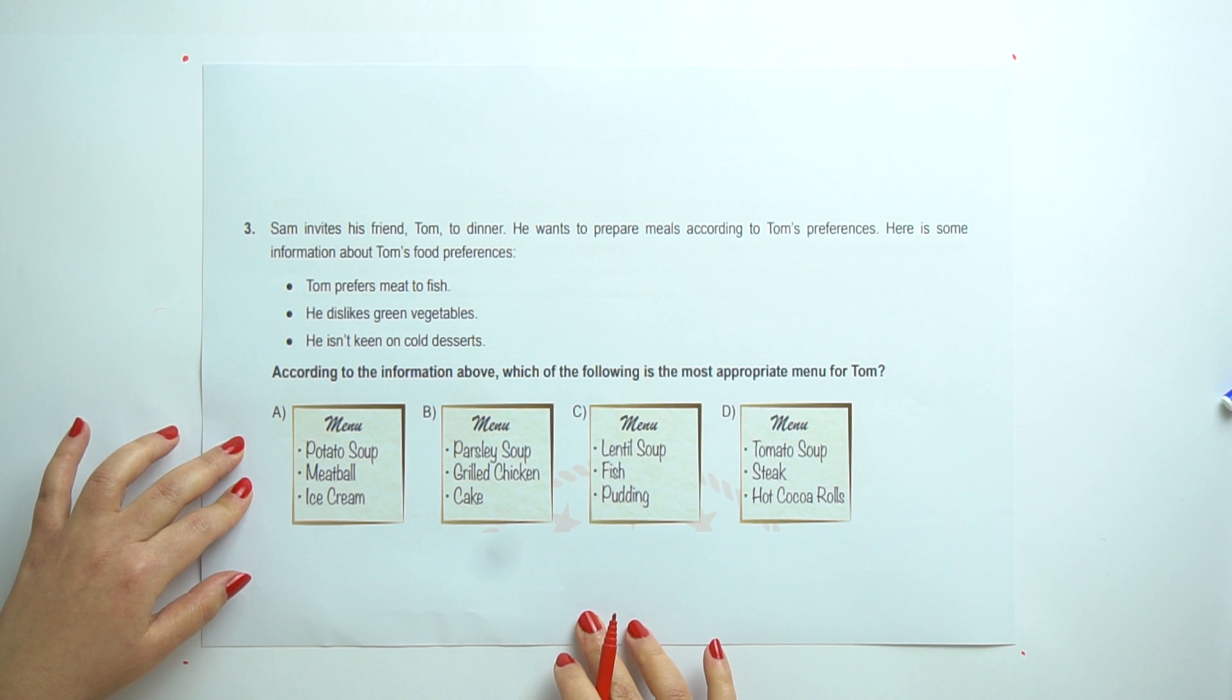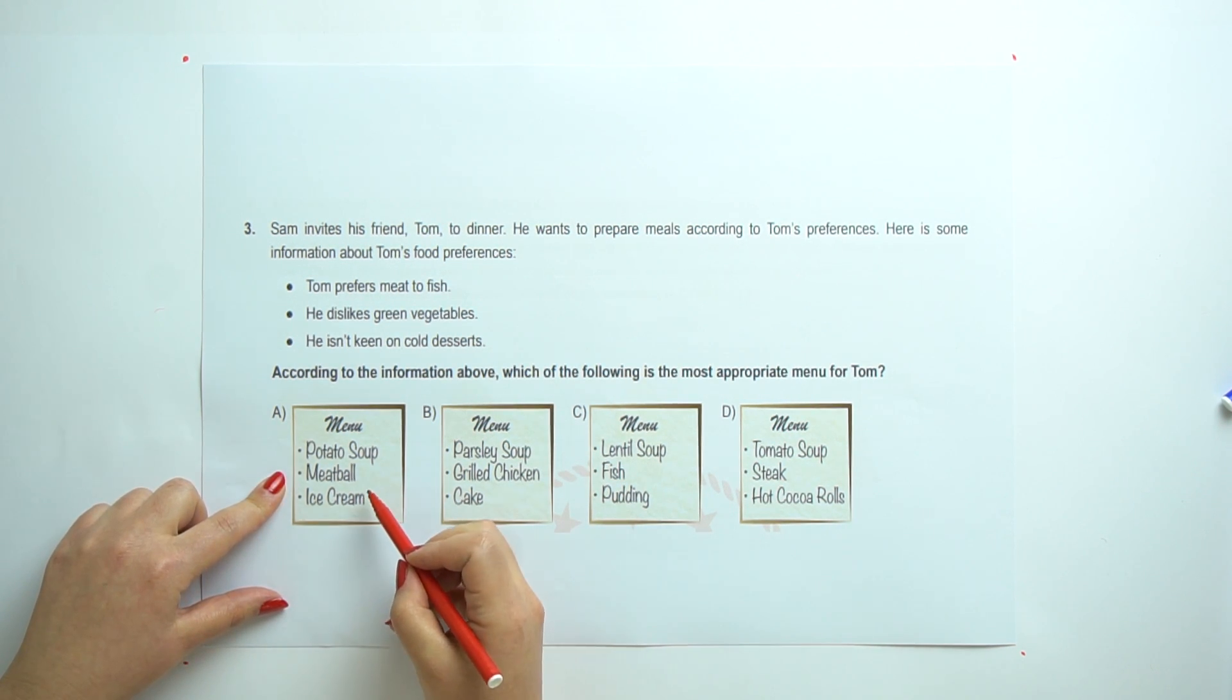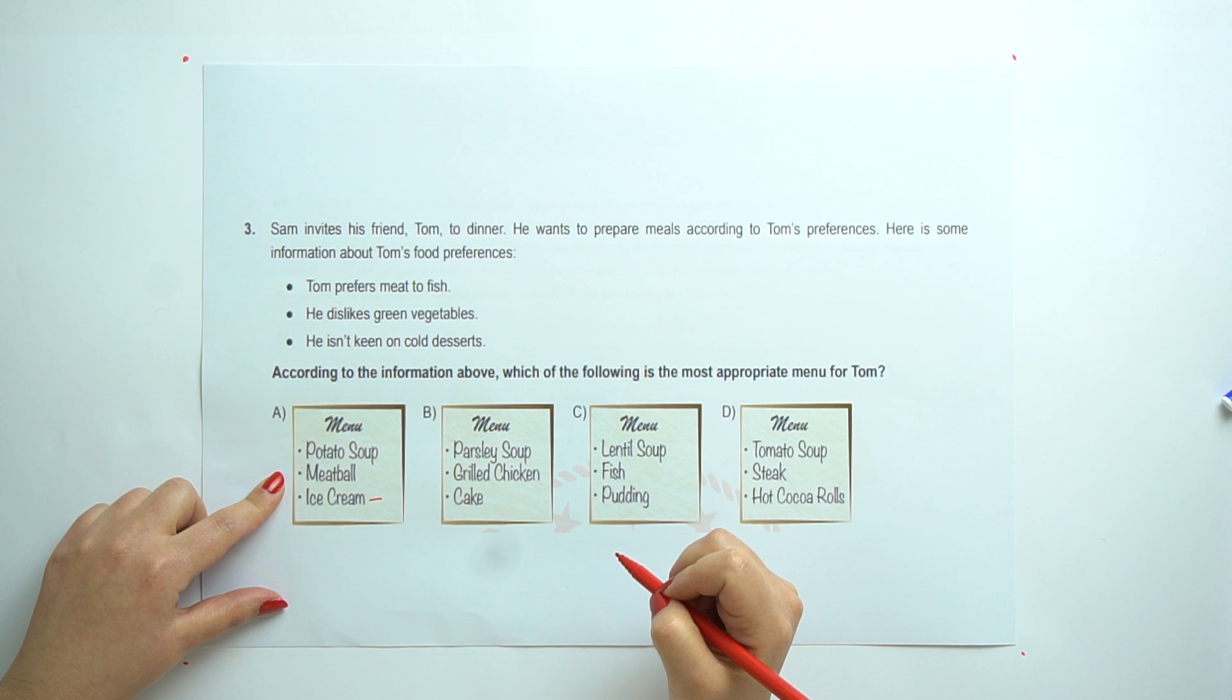So, let's have a look at the options one by one. Here, potato soup, meatball and ice cream. Here is ice cream. So, it is not suitable for Tom.